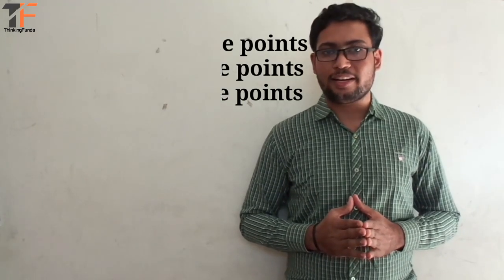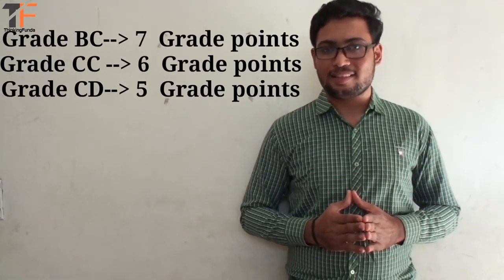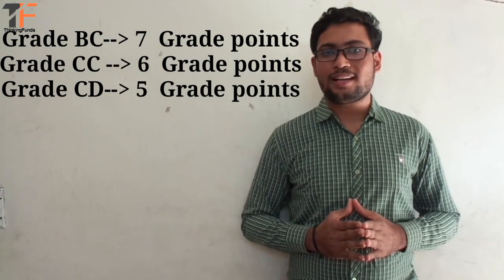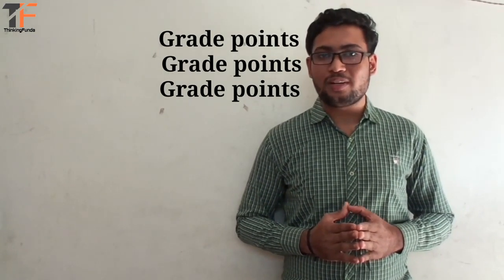For BB you will get 8 grade points. For BC you will get 7 grade points. For CC you will get 6 grade points. For CD you will get 5 grade points. For DD you will get 4 grade points. And for FF it counts as a fail grade.